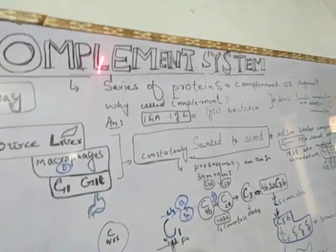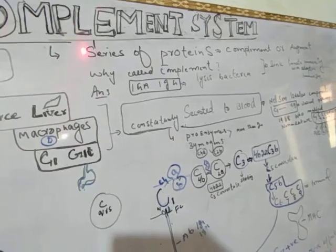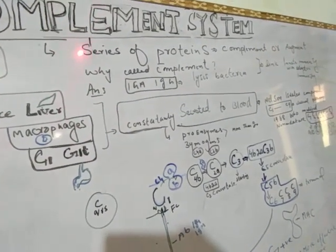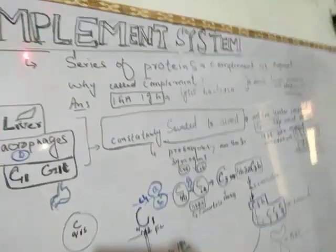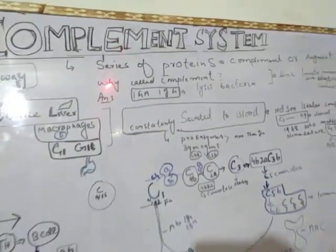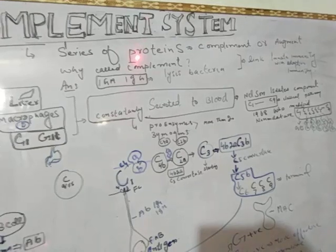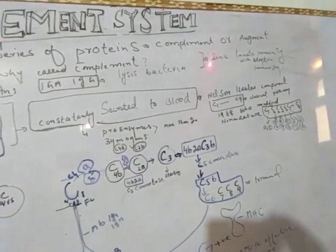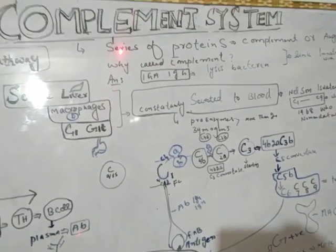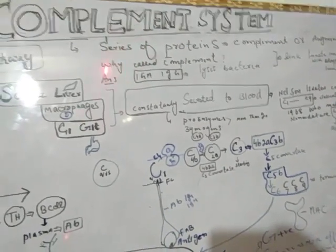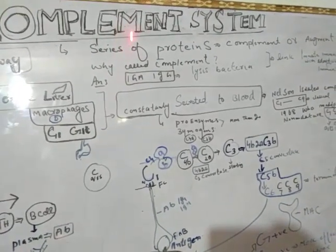So the first question is: what is the complement system? The complement system is a series of proteins that complement or augment the immune system function and inflammatory responses. It consists of multiple proteins which are produced in blood plasma and support immune system functions.